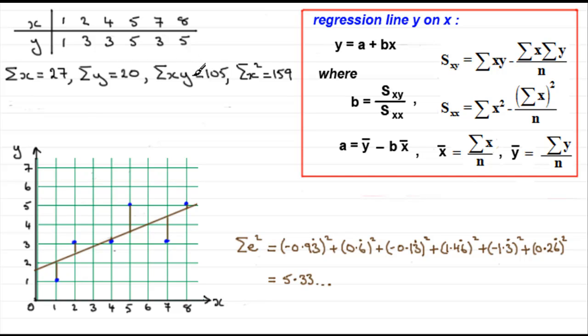If we were to do the sum of x y's, that's 1 times 1, which is 1, 2 times 3 is 6, and so on, it comes to 105.